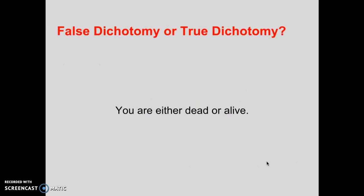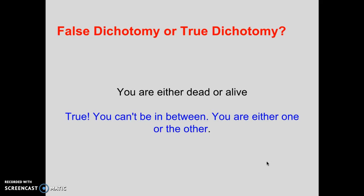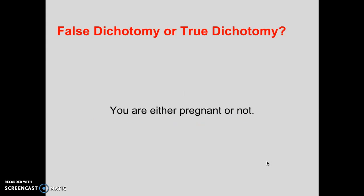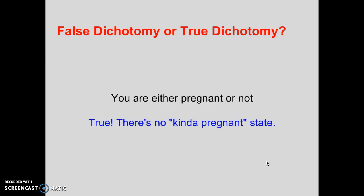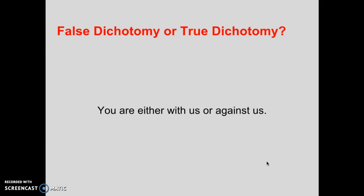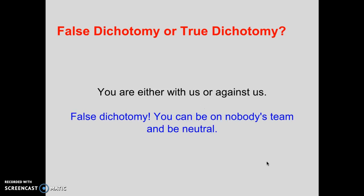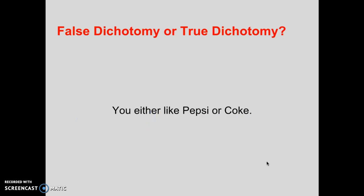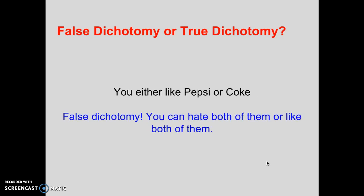Is it a false dichotomy or a true dichotomy? 'You're either dead or alive' — true, you can't be in between. 'You are either pregnant or not' — true, there's no kind of pregnant state. 'You are either with us or against us' — classic false dichotomy, because you can be on nobody's team and be neutral. 'You either like Pepsi or Coke' — false, I hate both of them actually.